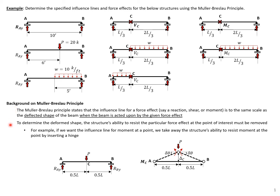To determine the deformed shape, we need to release the structure's ability to resist the particular force effect at the point of interest. For example, if we wanted an influence line for the moment at point C, we need to release the moment restraint — in other words, add a pin at point C — and then apply the moment back to the structure. This deformed shape would be our influence line for the moment at C.